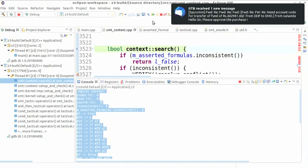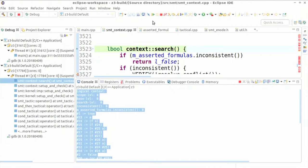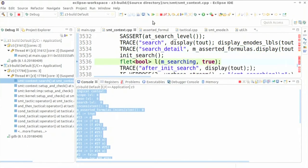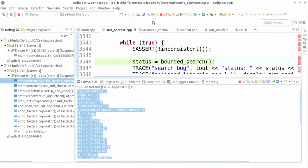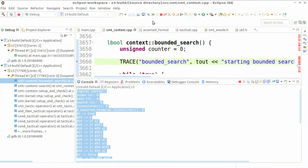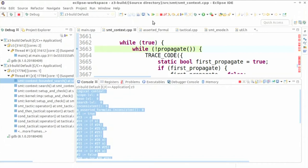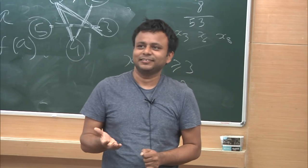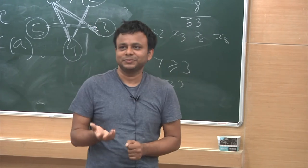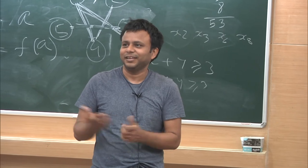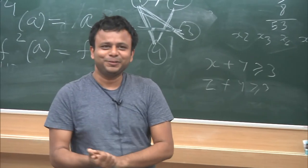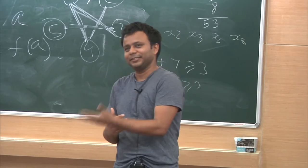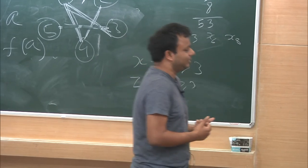Stepping inside the search function, we see a call to 'propagate.' What is being propagated? It is a Boolean BCP — unit propagation — but not only unit propagation: it also does theory propagation. If theories are involved, such as equality reasoning here, whatever the theory has to propagate is propagated, and all implied facts are retrieved from the solver.